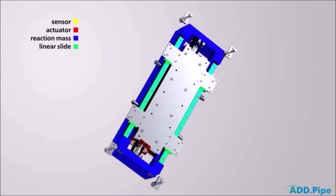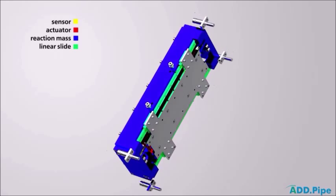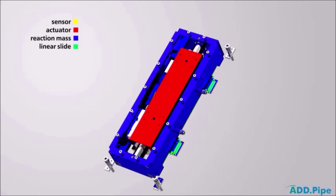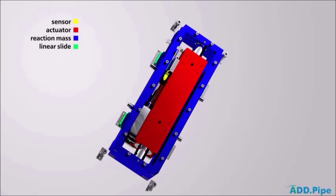Due to its modular design, ADD pipe is customizable in a very flexible way. One unit consists of sensor, actuator, reaction mass, and a linear slide.